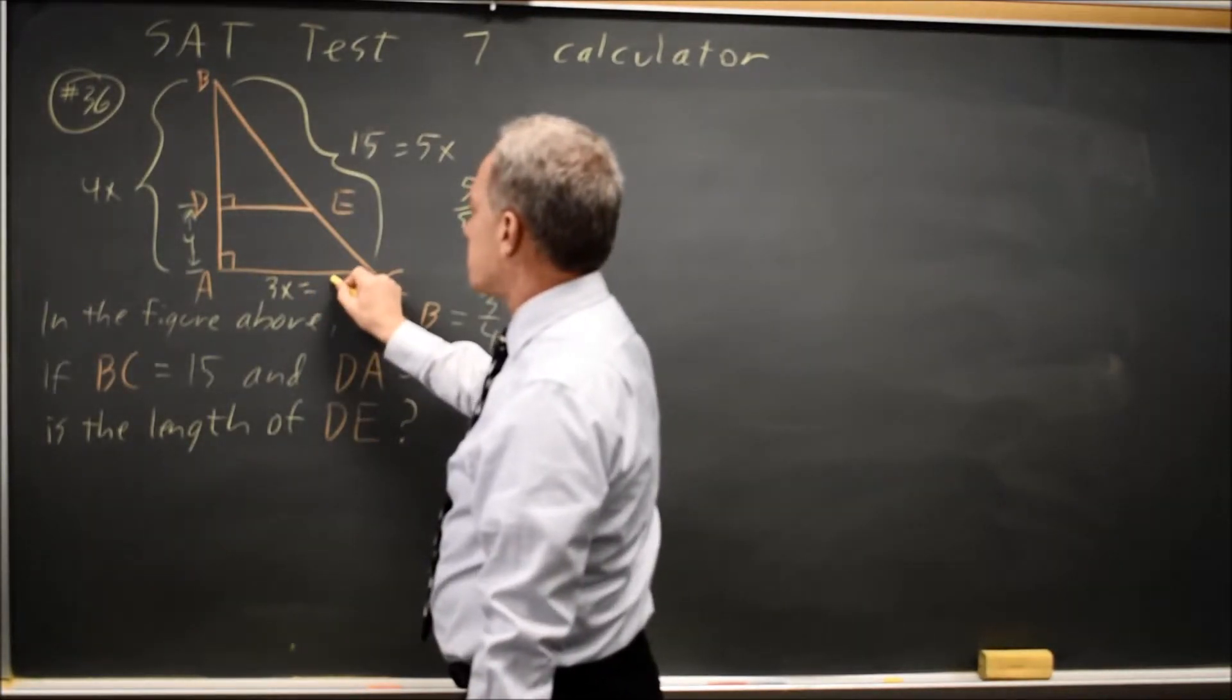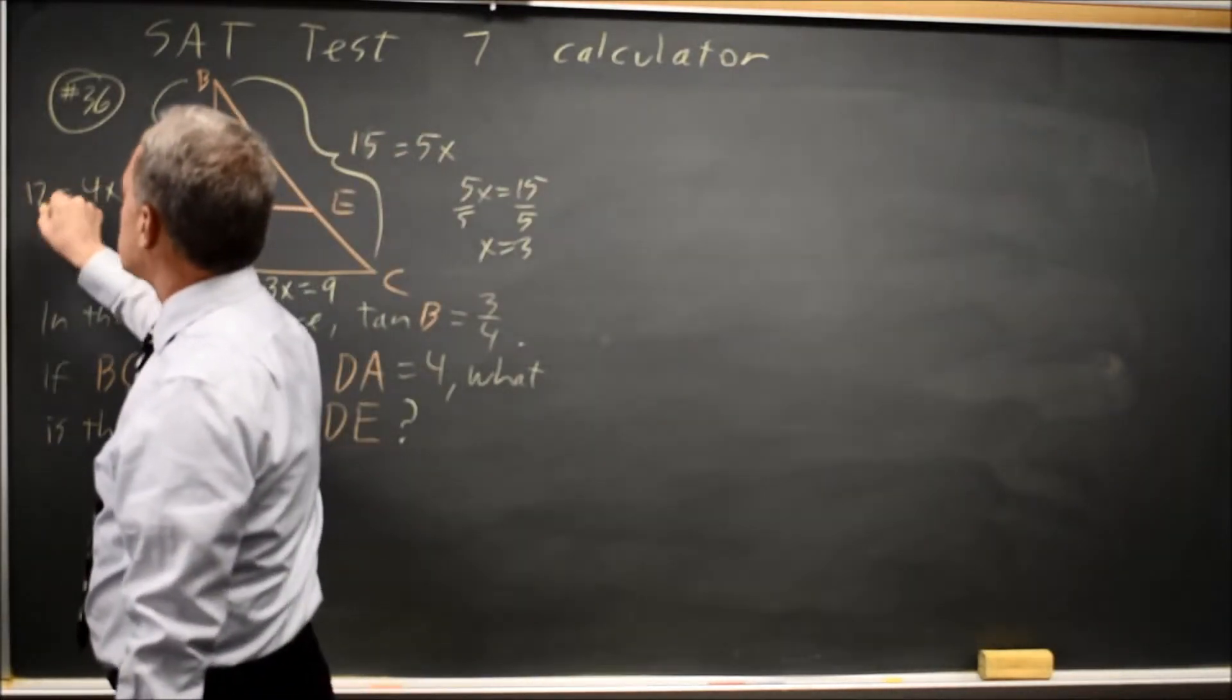So 3X equals 3 times 3 equals 9, and 4X equals 4 times 3 equals 12.